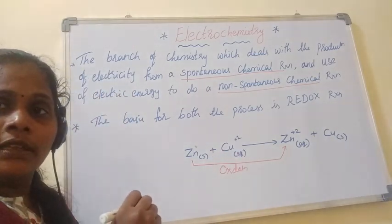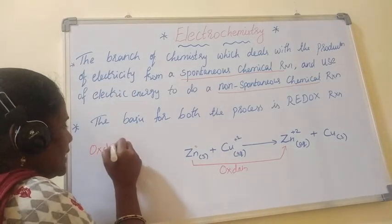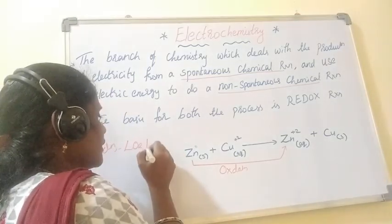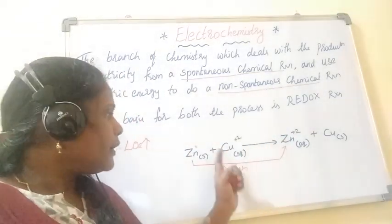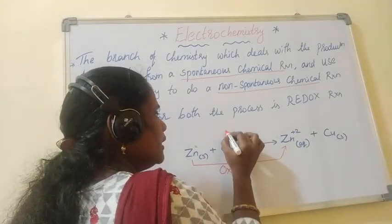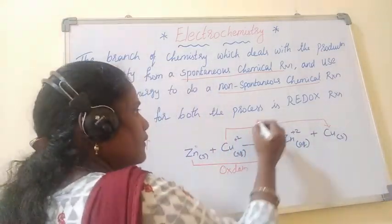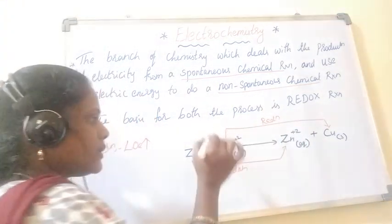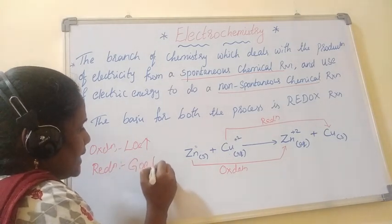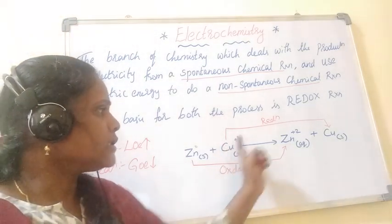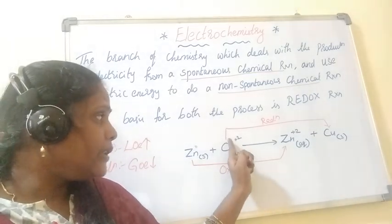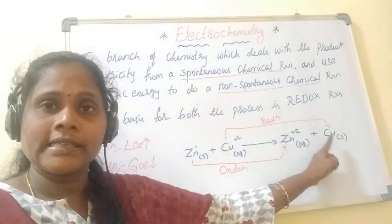What do you mean by oxidation? Loss of electrons is called oxidation — or remember, increase in oxidation number is called oxidation. And copper: copper is converting from +2 to 0, therefore this is called reduction, because copper is gaining 2 electrons. Gain of electrons is called reduction. It gains 2 electrons and converts into solid copper, reducing its oxidation number. Therefore this process is called reduction.